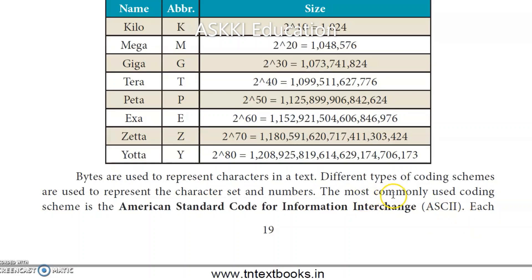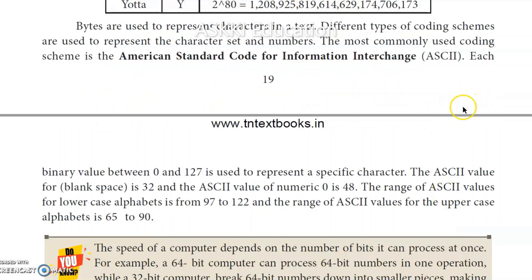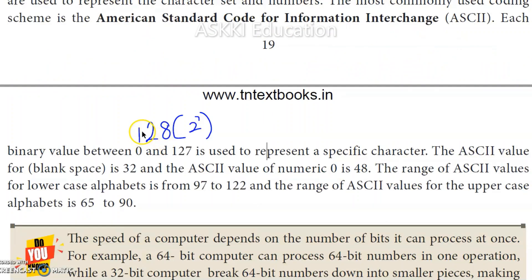The most common coding scheme is ASCII — American Standard Code for Information Interchange. Each binary value between 0 and 127 is used to represent a specific character. That gives us a total of 128 values (including 0). Since 2 power 7 equals 128, ASCII uses 7 bits to represent each character.